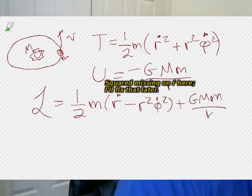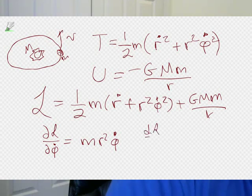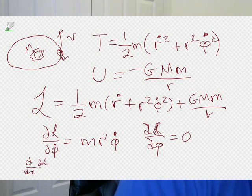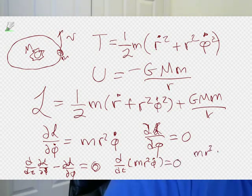Let's do the Euler-Lagrangian equation for phi. Partial L partial phi dot is m r squared phi dot. Partial L by partial phi is 0 because no phi shows up anywhere. If you do the Euler-Lagrangian equation, which is d/dt of partial L partial phi dot minus partial L partial phi equals 0, that tells us that d/dt of m r squared phi dot equals 0, or m r squared phi dot equals a constant.